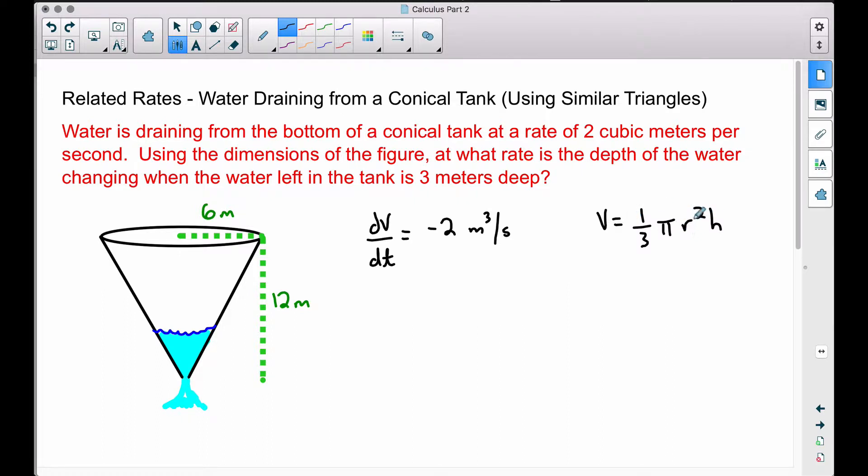Therefore, we want to try to find some way to get this r in terms of h. So check out this triangle I have right here. This is the triangle that models this base, or this radius of the top of the cone. This circle, the radius is 6, and the height, or the depth of this cone is 12. Let's take this similar triangle and write those two numbers down.